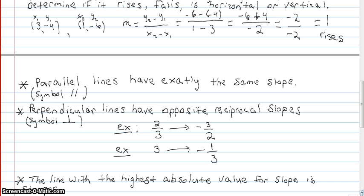A couple last ideas we have to talk about: parallel lines have exactly the same slope. I've left the symbol here for parallel and you're welcome to use that instead of writing the word. Perpendicular lines have opposite reciprocal slopes. Here's the symbol for perpendicular, so you're welcome to use that. Here are a couple examples of opposite reciprocal slopes: 2 thirds is the opposite reciprocal of negative 3 halves, 3 is the opposite reciprocal of negative 1 third, 2 would be the opposite reciprocal of negative 1 half. The line with the highest absolute value for slope is always steeper.